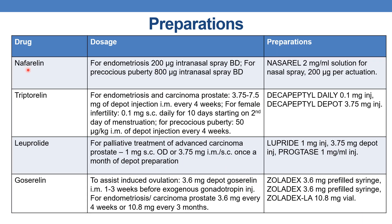The next drug is nafarelin. For endometriosis: 200 mcg intranasal spray twice daily. For precocious puberty: 800 mcg intranasal spray twice daily. The preparation is a 2 mg per ml solution for nasal spray delivering 200 mcg per actuation.